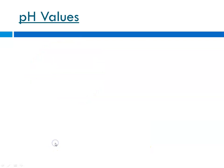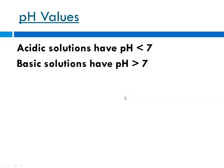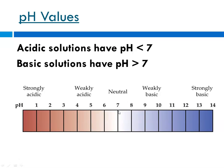pH values: acidic solutions have a pH less than 7 — even 6.9 is considered slightly acidic. Basic solutions have a pH greater than 7 — 7.1 is still a little basic. Here is the basic scale with 7 being neutral. Why is 7 neutral? Because a pH of 7 means [H₃O⁺] equals 10⁻⁷ and [OH⁻] equals 10⁻⁷. When they are equal, the solution is neutral. This applies to values measured at 25°C.